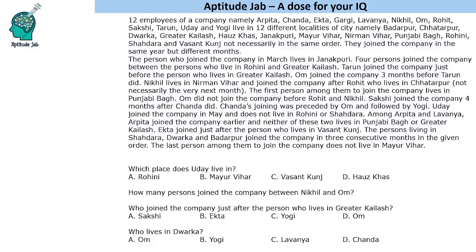Hello everyone, welcome to Aptitude Jab. This is an arrangement-based set. It says that there are 12 employees who joined a company in the same year in different months and they live in 12 different localities. The names of the localities and the names of people are given in the beginning. We have to find who joined in which month and lives in which locality.